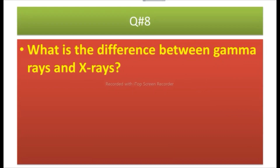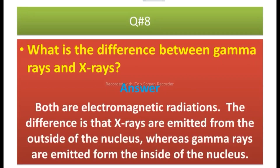Question number eight: What is the difference between gamma rays and X-rays? Answer: Both are electromagnetic radiation. The difference is that X-rays are emitted from outside the nucleus, whereas gamma rays are emitted from inside the nucleus.